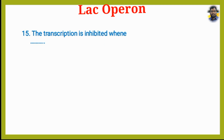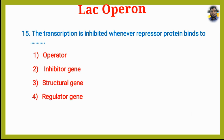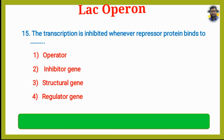Transcription is inhibited whenever repressor protein binds to which region? Option 1: Operator. Option 2: Inhibitor gene. Option 3: Structural gene. Option 4: Regulator gene. The answer is Option 1, Operator.